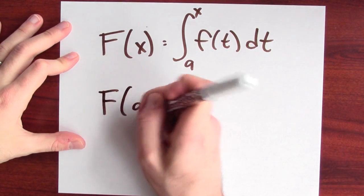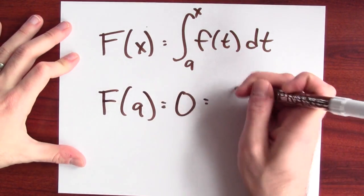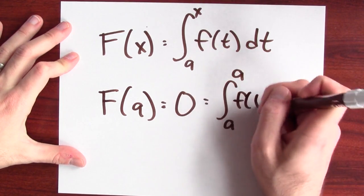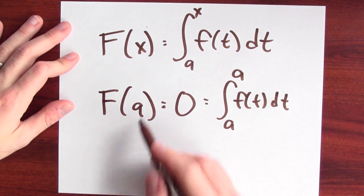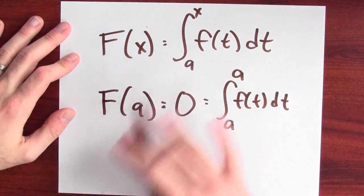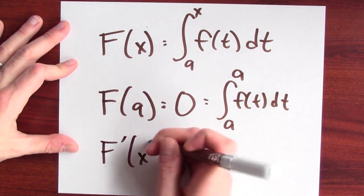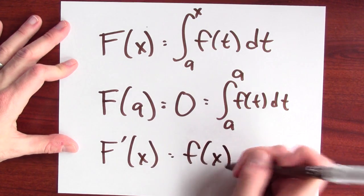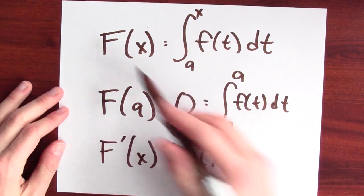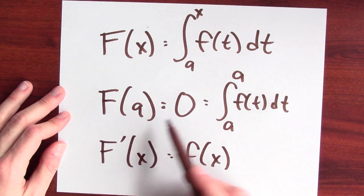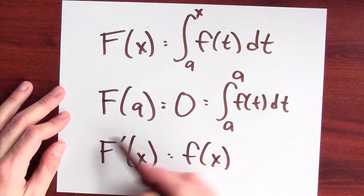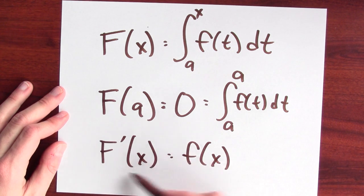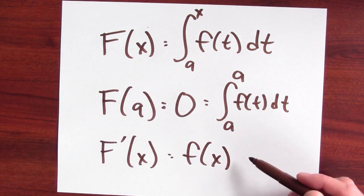So what do I know about the accumulation function big F of x? Well, I know that big F of a is equal to 0, because it's the integral from a to a of f of t dt. So I know the value of big F at a. And I know how big F changes. I know that the derivative of big F is little f. And now I'm trying to calculate big F of b. So I know that big F of a is equal to 0. And I know something about how big F changes. The change in big F is related to little f. That is enough information to recover big F.